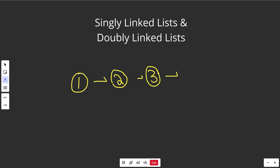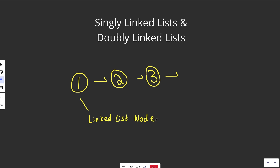Later on we'll see a doubly linked list that would basically just be this where we have the backwards link as well. But this is called a singly linked list where each of these things — generally you call them a linked list node, or in short form, just a node.